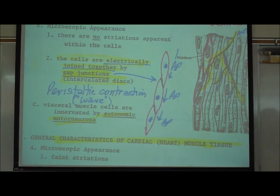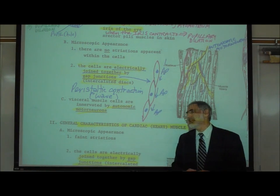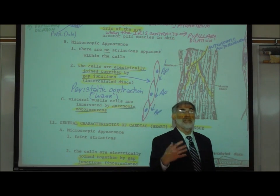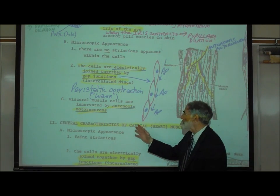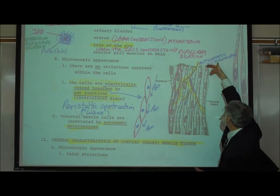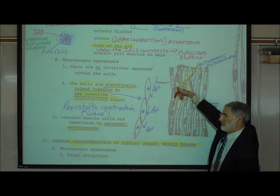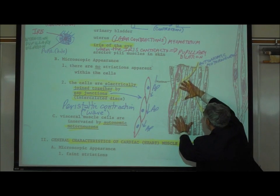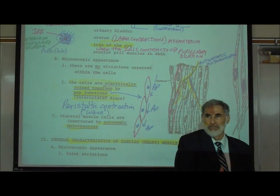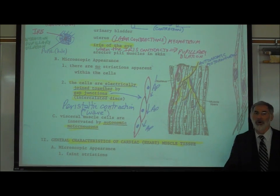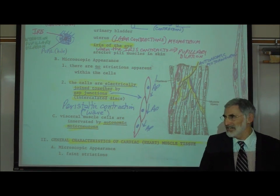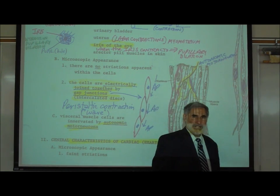Unlike skeletal muscle cells, visceral smooth muscle is innervated by autonomic motor neurons. Autonomic — which sounds like automatic — means they work automatically and are not under voluntary control. A command comes from your brain via the autonomic motor neuron and automatically commands action potentials and contractions in the visceral smooth muscle of your intestine, stomach, uterus, blood vessels, and so on. We don't have voluntary control over autonomic motor neurons, and therefore we don't have voluntary control of peristaltic contractions in our intestine, the uterus, or visceral organs generally.